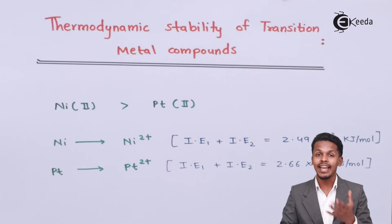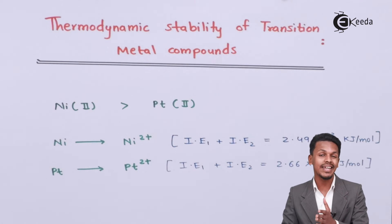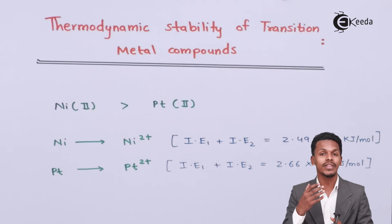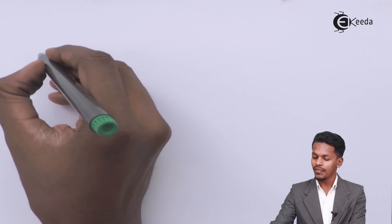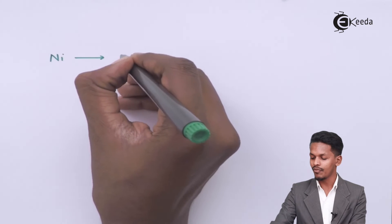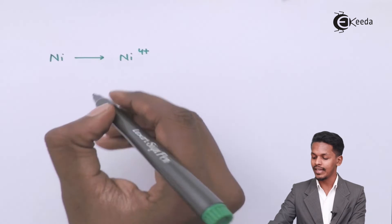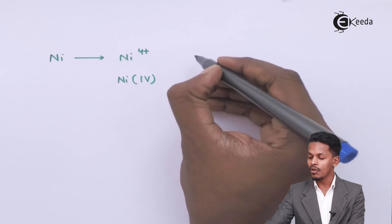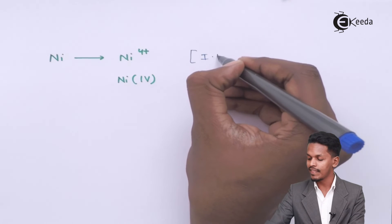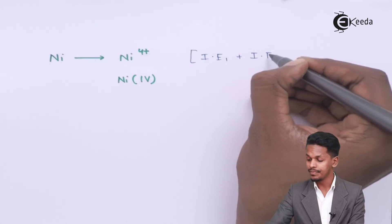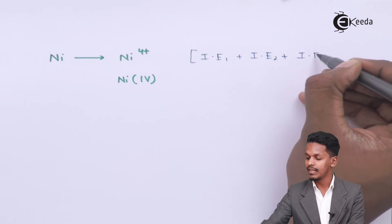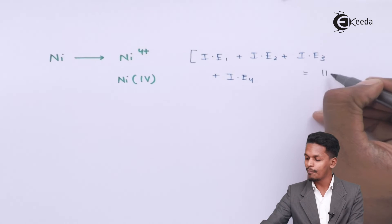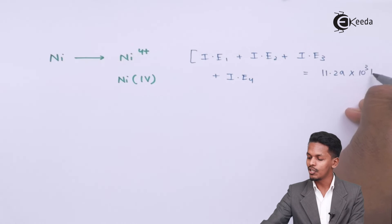Now if we compare Ni⁴⁺ ions with Pt⁴⁺ ions to understand which is more thermodynamically stable — during conversion of nickel to Ni⁴⁺, the sum of all four ionization enthalpies (IE1 + IE2 + IE3 + IE4) was found to be around 11.29 × 10³ kilojoules per mole.